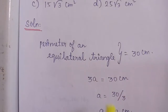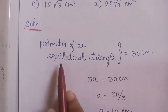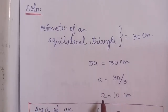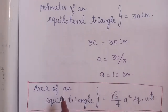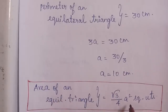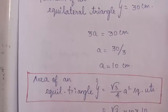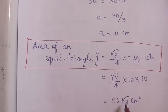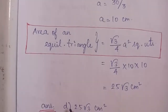Solution: Perimeter of an equilateral triangle is given as 30 cm. Since all sides are equal, 3A equals 30 cm, so A equals 10 cm. The formula for the area of an equilateral triangle is √3 by 4 times A square. This equals √3 by 4 into 10 squared, which is 25√3 cm square. The correct answer is Option D: 25√3 cm square.